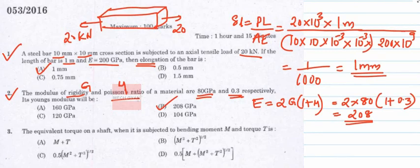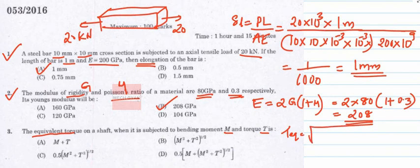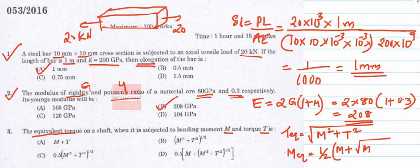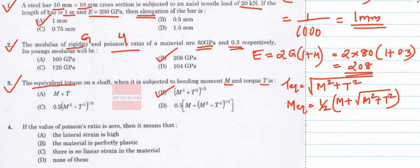Question 3: The equivalent torque on a shaft subjected to bending moment M and twisting moment T is given by T_eq = √(M² + T²). Similarly, the equivalent bending moment is M_eq = ½(M + √(M² + T²)). The answer for equivalent torque is option B.